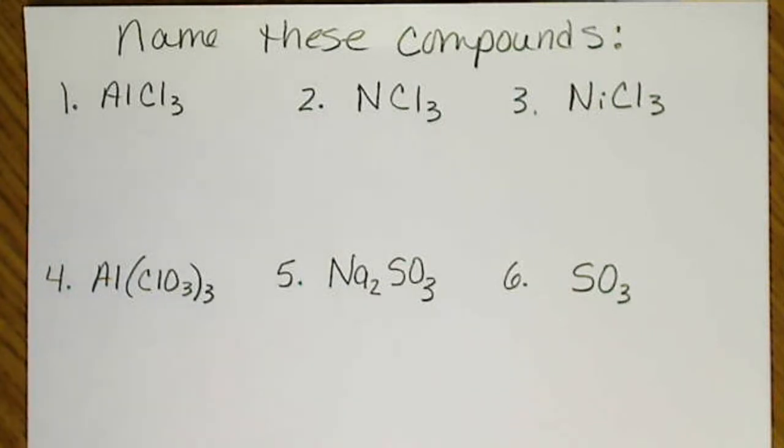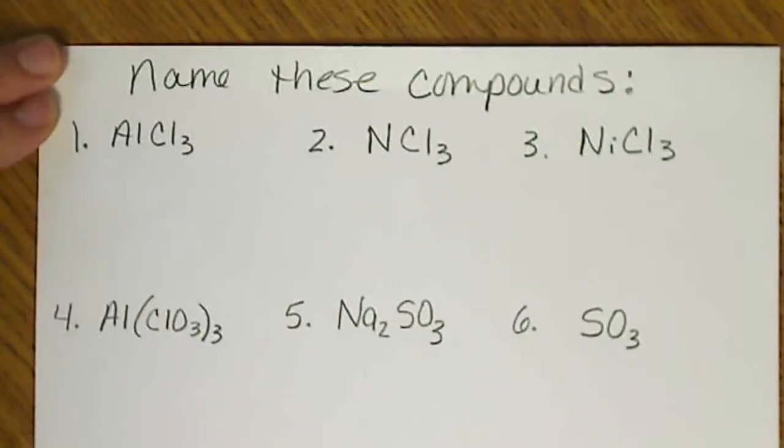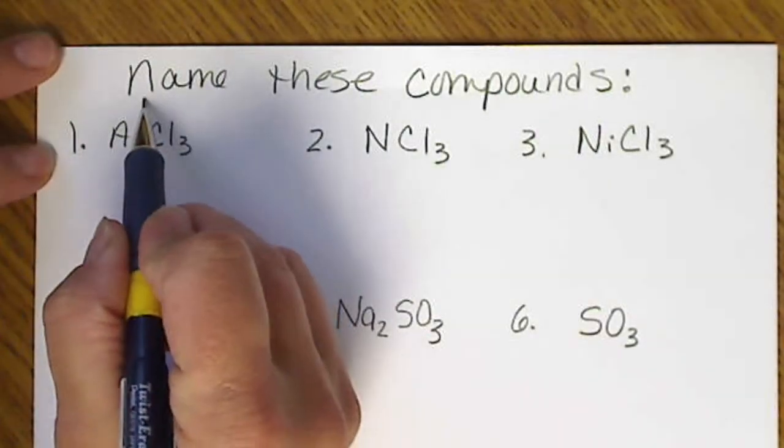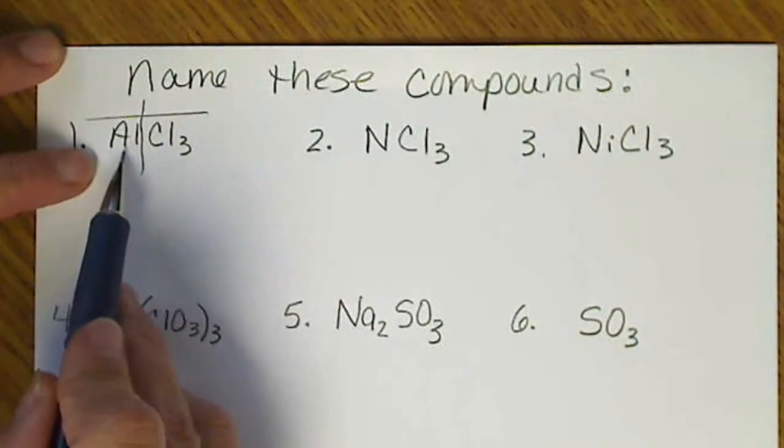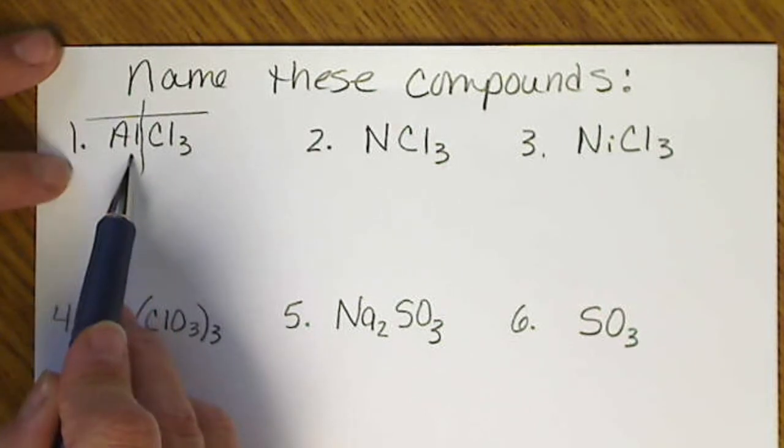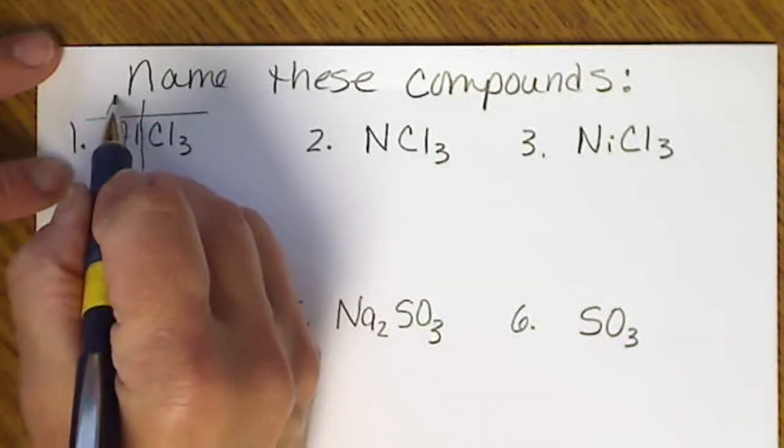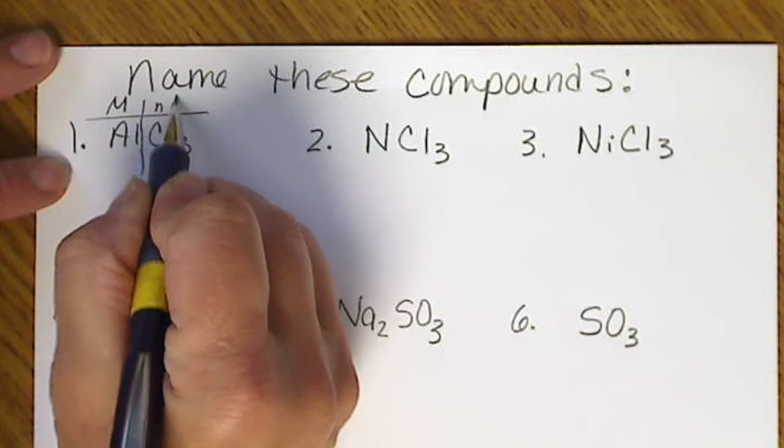We're just going to start with these six compounds to name. If we break apart, if we draw a line after the first atom, we can see this is a metal and this is a non-metal.